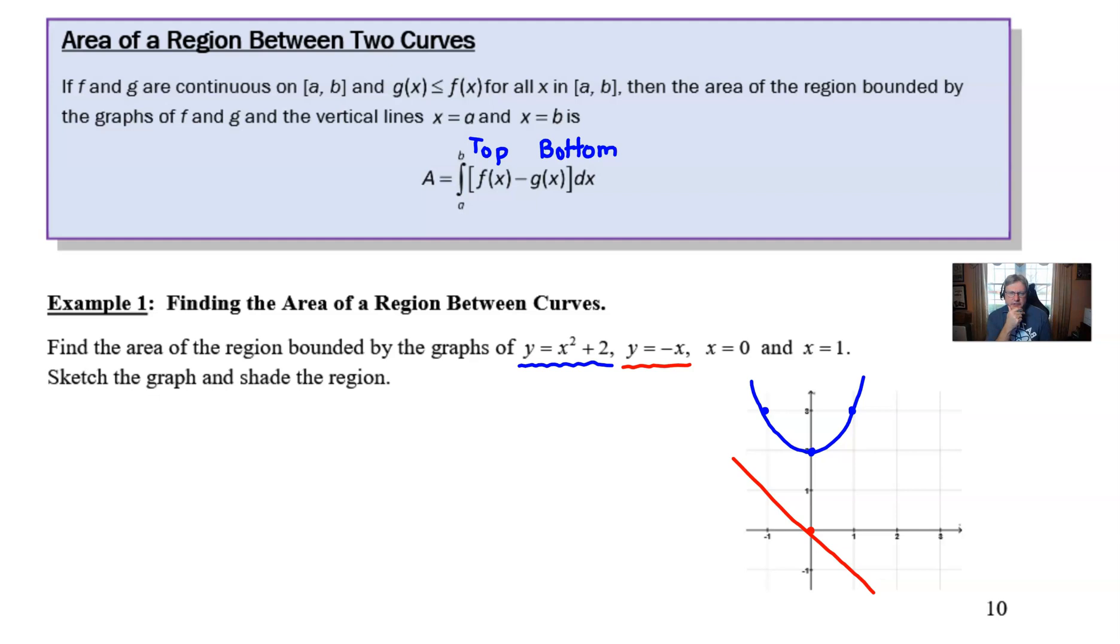Notice that we do not have an enclosed region. If you were a rancher and you had some cattle, you wanted to build fences out of these graphs to hold your cattle, we would have a problem. These cattle will be roaming everywhere. But that's about to change when we graph x = 0 and x = 1. X = 0 is just really basically the same thing as the y-axis. And then finally, we can sketch x = 1, the vertical line right here. Before you know it, you have an enclosed region that you can even shade in as per the directions indicate.